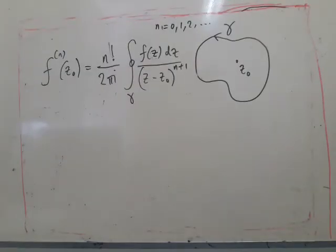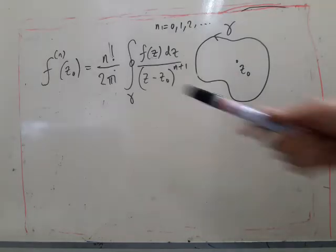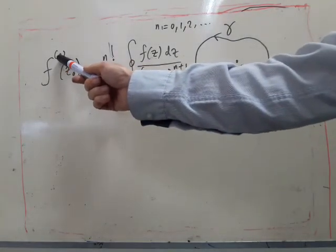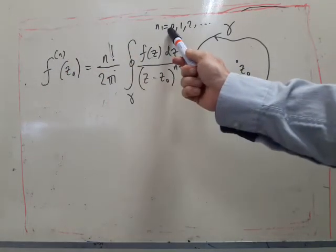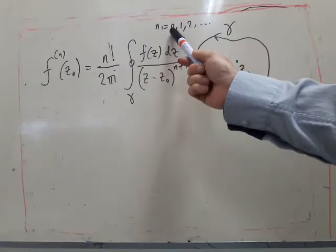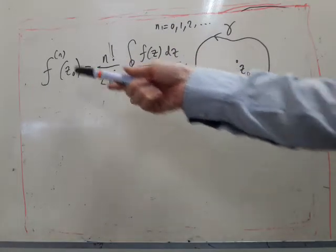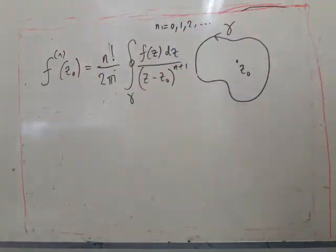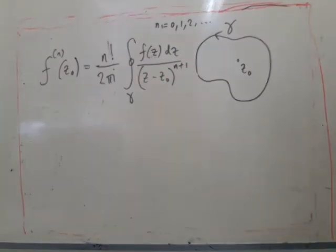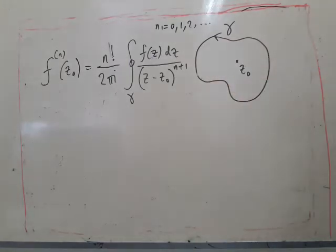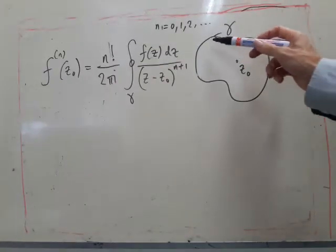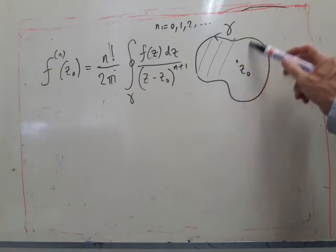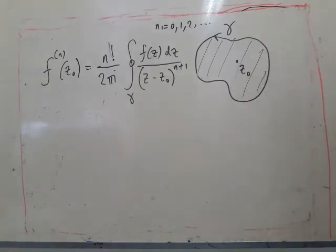So Cauchy's integral formulae are these, where this just means the nth derivative, so there can be any n. n equals zero, not the derivative, or first derivative n equals one, second derivative and so on is given by this. And gamma is such that it's a simple closed curve and f is analytic everywhere inside gamma including at z naught.